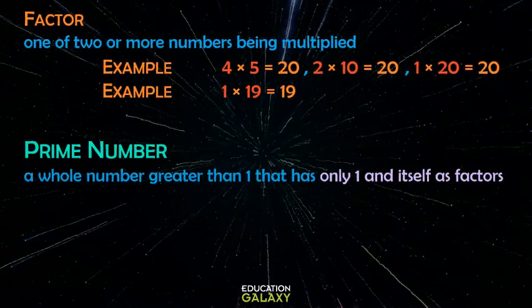A prime number is a whole number greater than 1 that has only 1 and itself as factors, like the example I just gave you, 19, and here are some other examples.